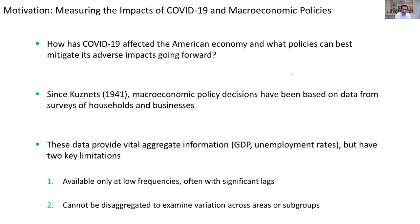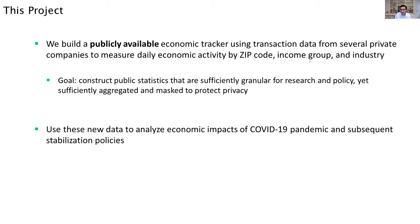Recognizing those issues, what we sought to do is build a publicly available economic tracker — a publicly available database using transaction data from several private companies to measure daily economic activity at a very high frequency, in a granular way by zip code, by income group, by industry. Unlike a lot of recent research using private sector data — including the terrific work being done by the JPMorgan Chase group and collaborators in academia — that work has been really valuable in the research results that have come out of it.